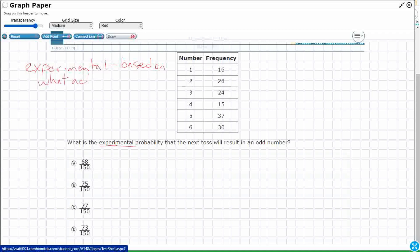So in this case, we tossed this die 150 times, and so we have all of these results. So we are going to make a prediction based on the experimental data, and we'll look at that.